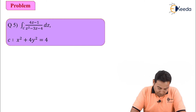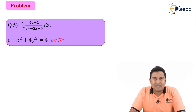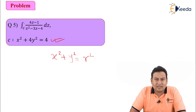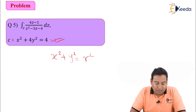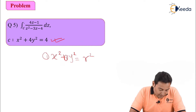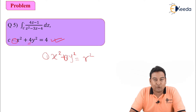Let us see how to solve a problem based on ellipse. Looking at the given equation, you might be wondering whether this is an ellipse or a circle. The equation of a circle is x² + y² = r², where r is the radius — we need a coefficient of 1 for both x² and y². Here, beside y² we don't have 1, so this is not a circle.